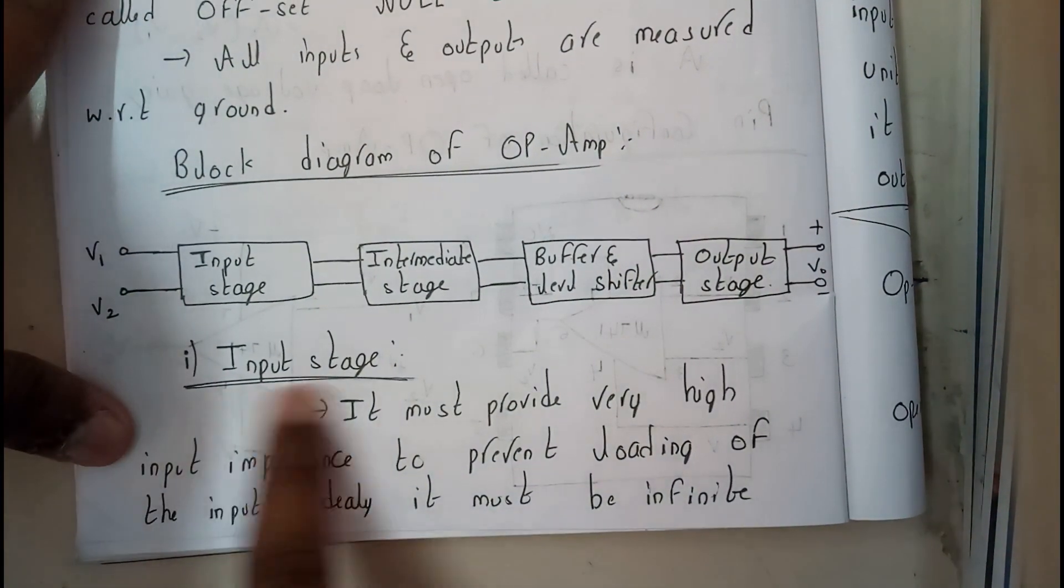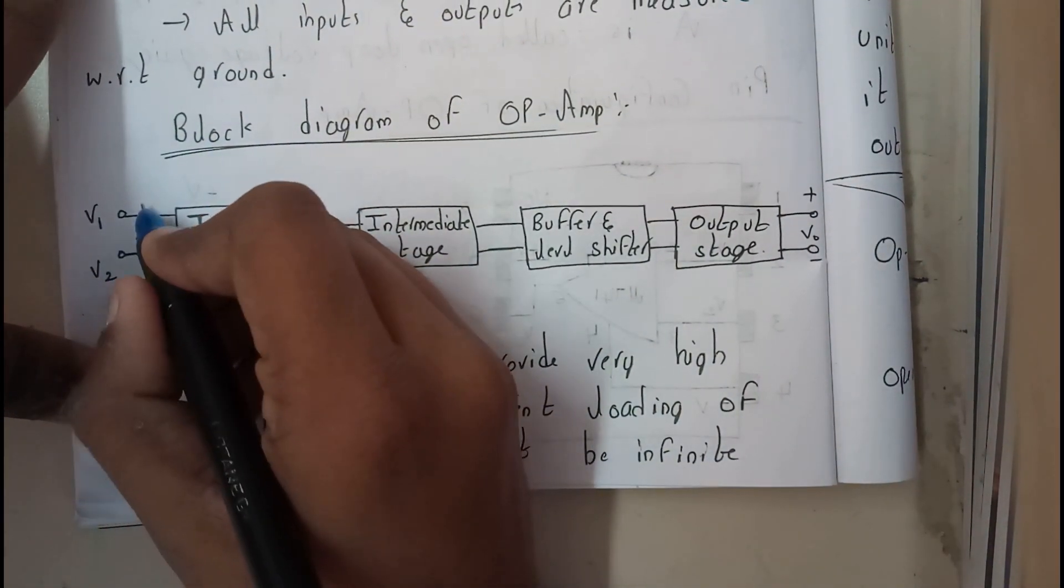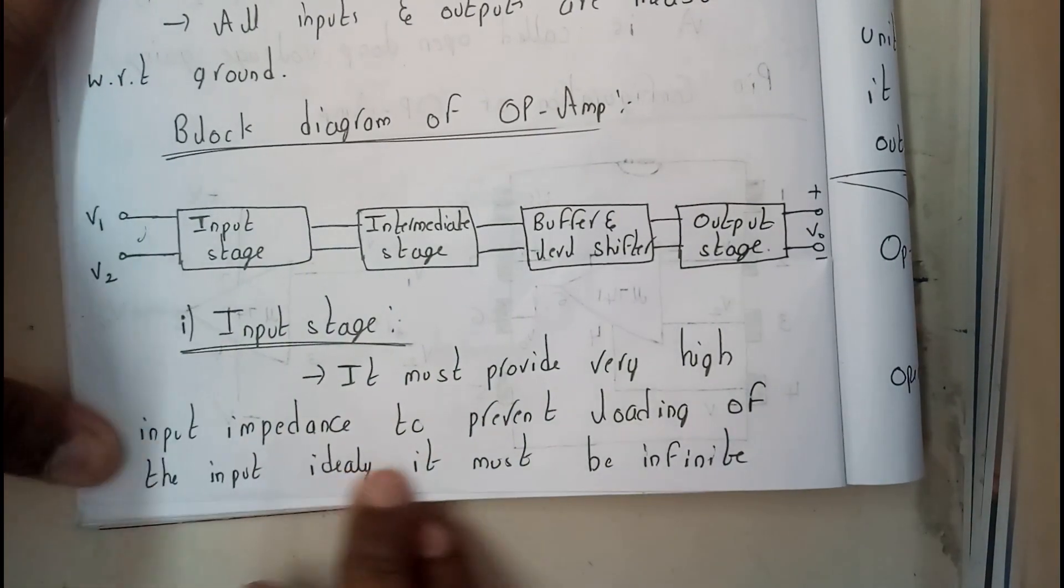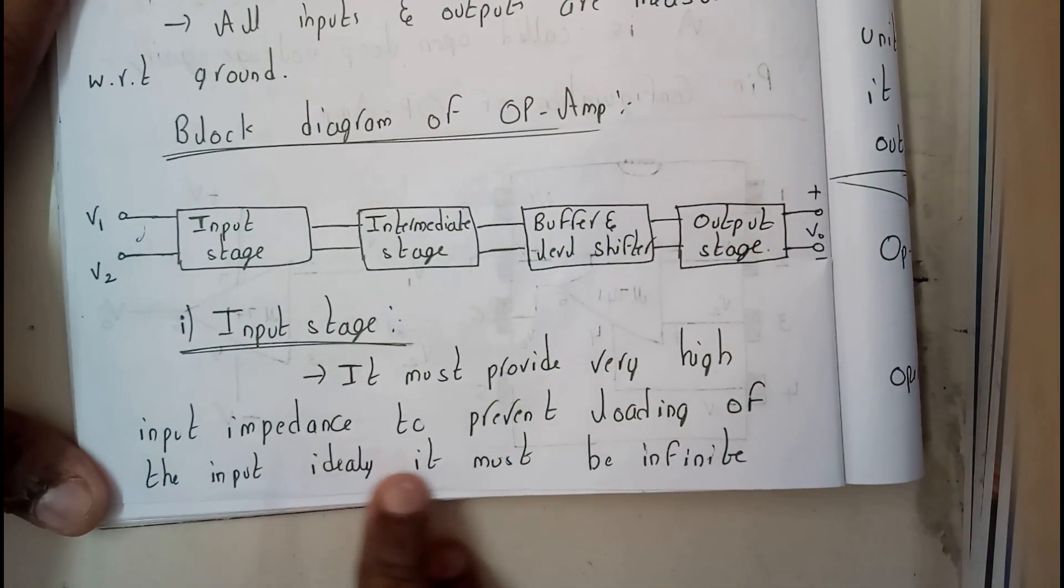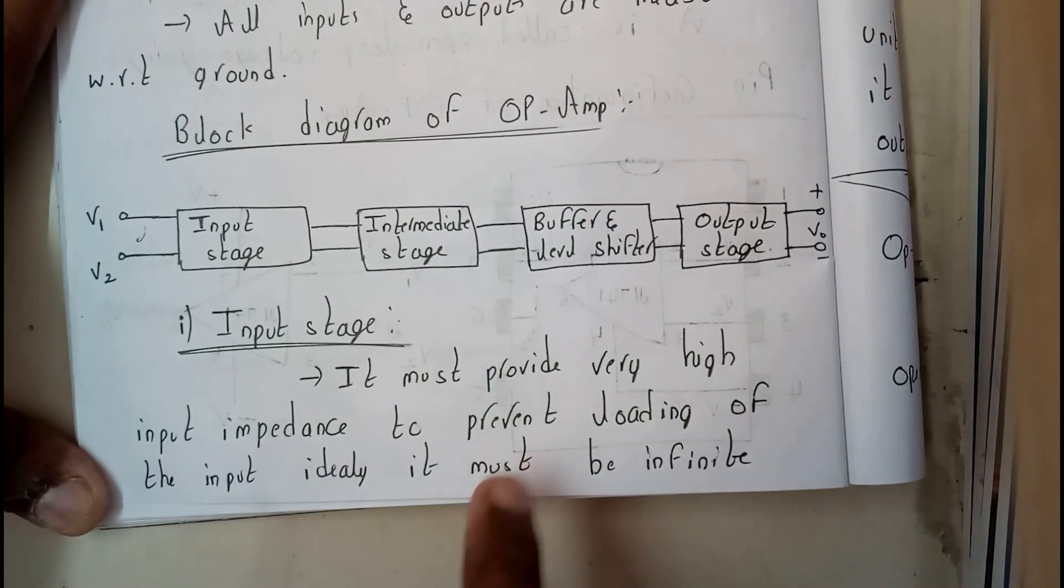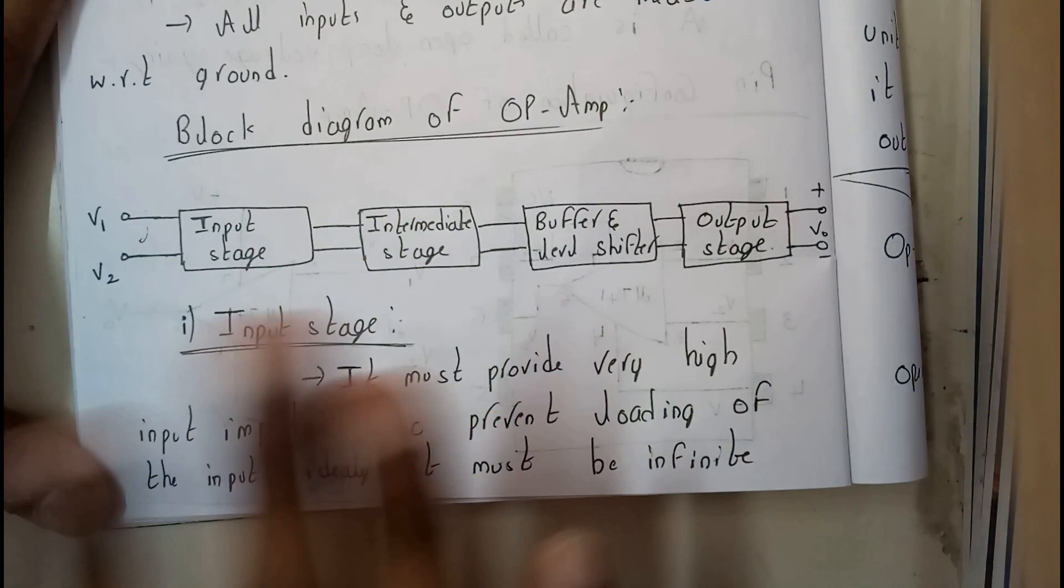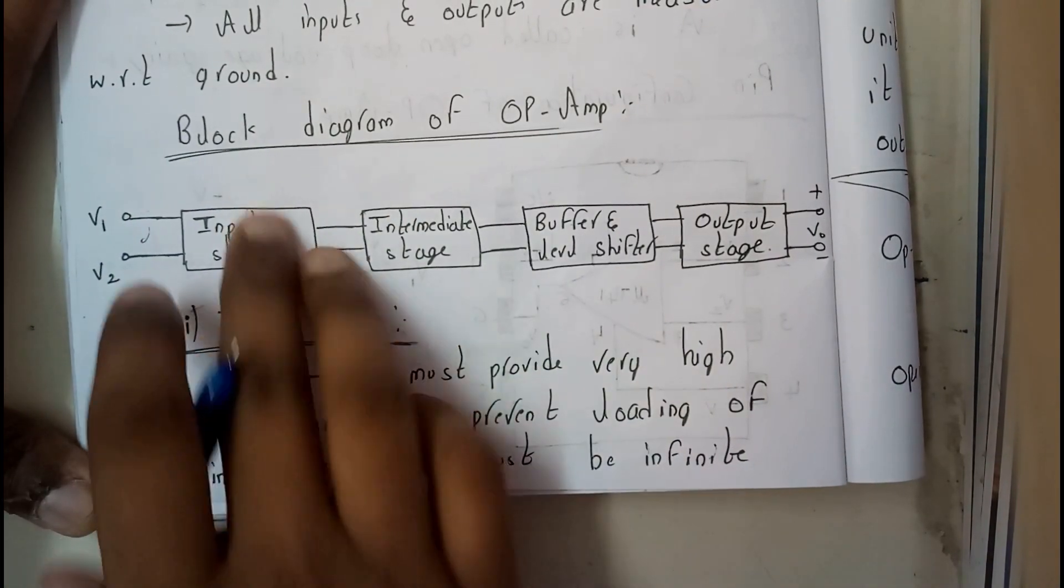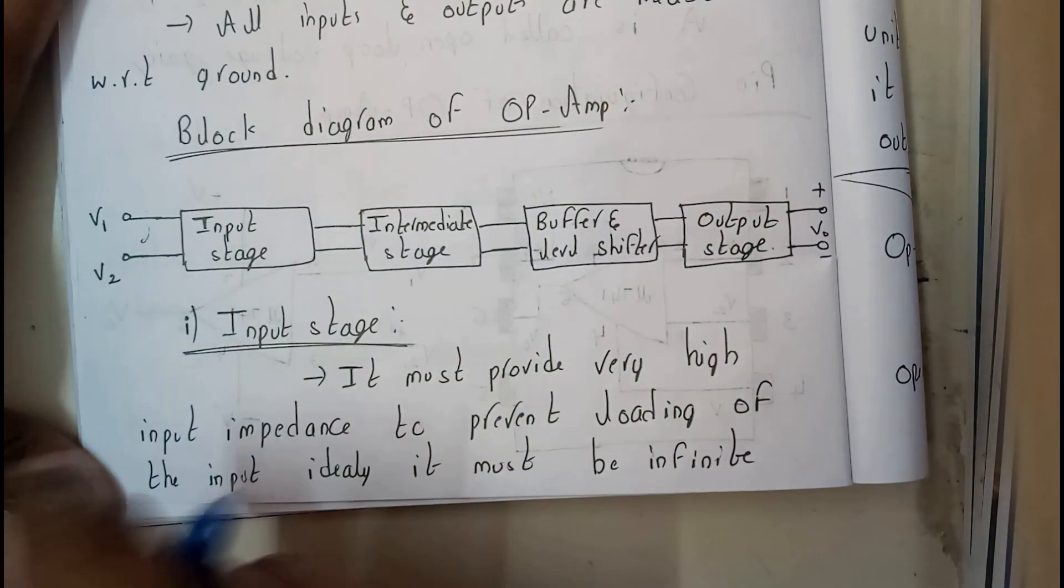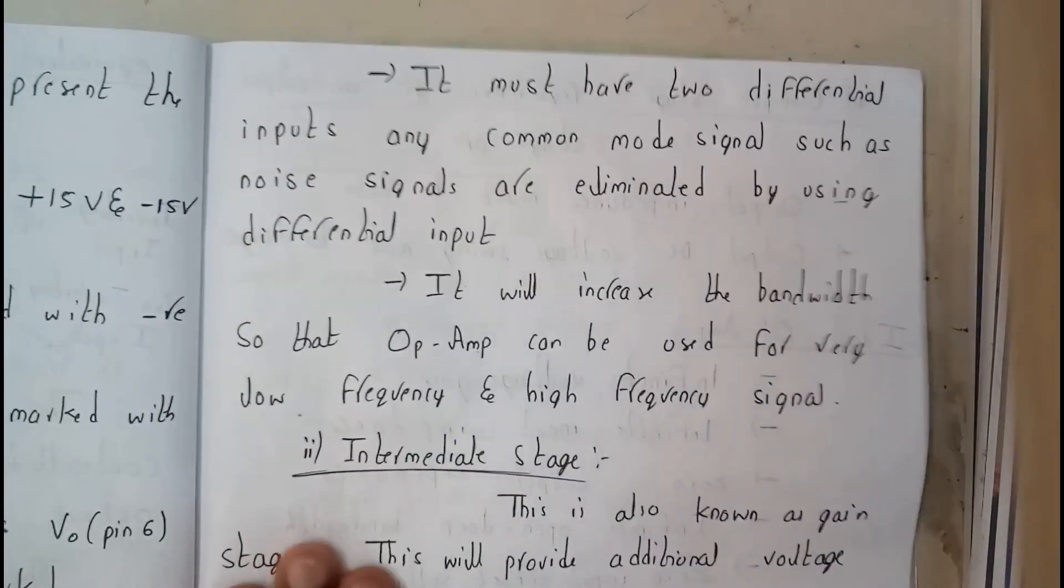So basically the input stage, it must provide very high input impedance guys. The input impedance is very high to prevent the loading of the input stage. So for an ideal one, it is infinity guys. So we have to remember that the input impedance should be more, that will be our first condition. And for an ideal one, it's infinity.